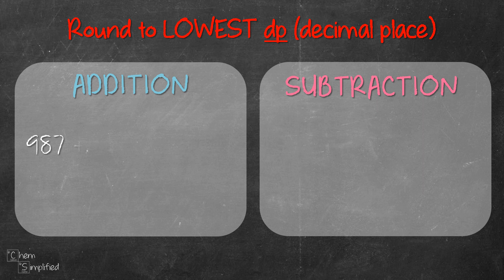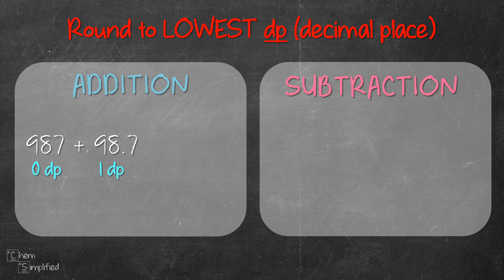Let's look at this example for addition. We have 987 plus 98.7. 987 has zero decimal places because there is no digit that comes after the decimal point. 98.7 has one decimal place because there is one digit after the decimal point. Since the rule is to round off following the lowest decimal place, our answer should be presented in zero decimal places. When we add up these two numbers, we get 1085.7.